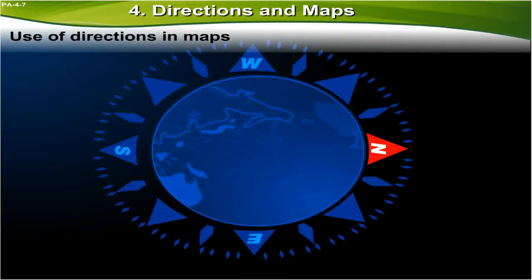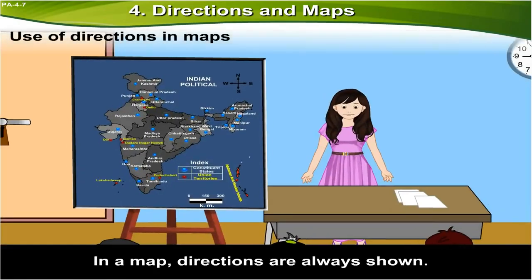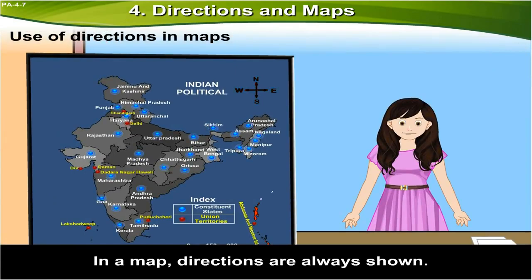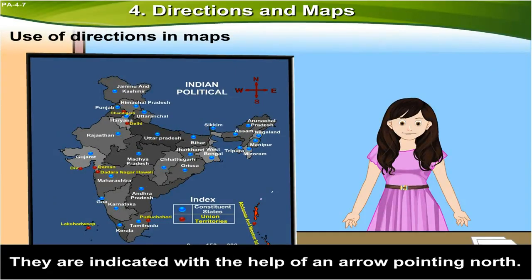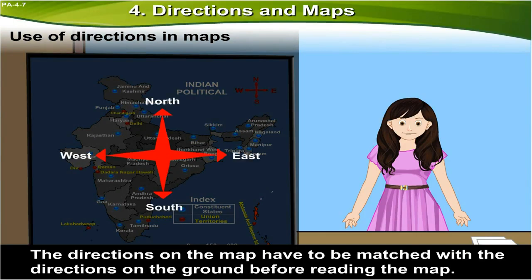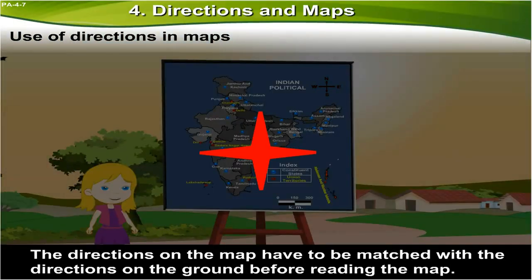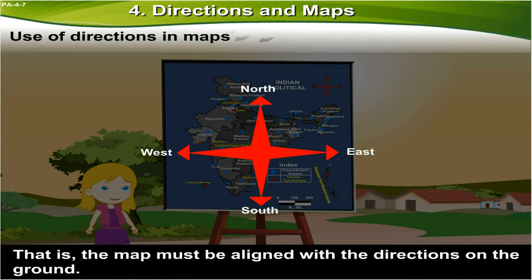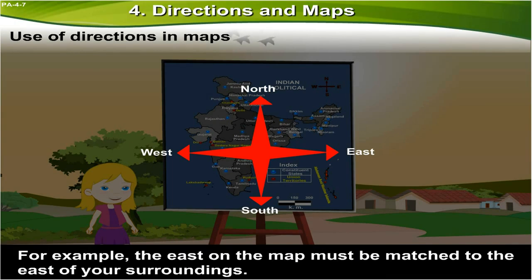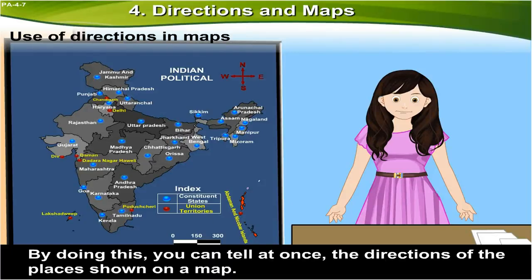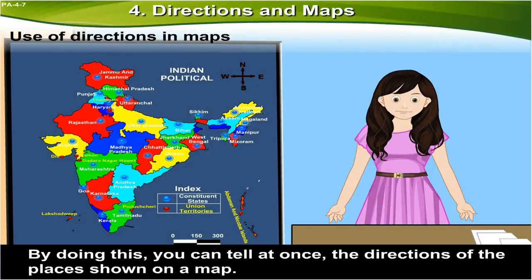Use of directions in maps. In a map, directions are always shown. They are indicated with the help of an arrow pointing north. The directions on the map have to be matched with the directions on the ground before reading the map. That is, the map must be aligned with the direction on the ground. For example, the east on the map must be matched to the east of your surroundings. By doing this, you can tell at once the directions of the places shown on a map.